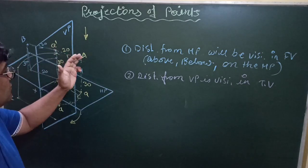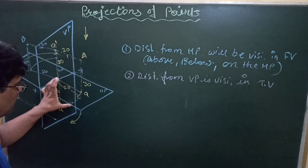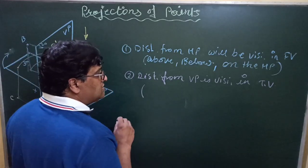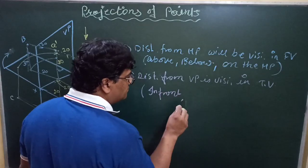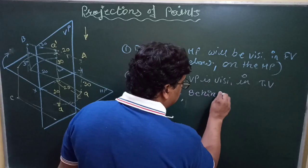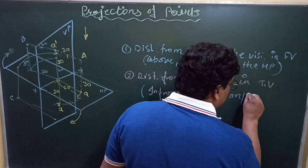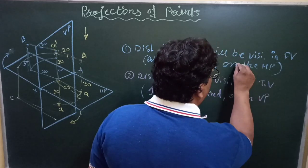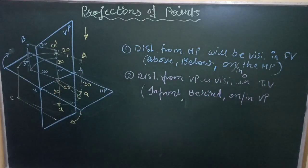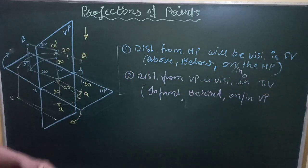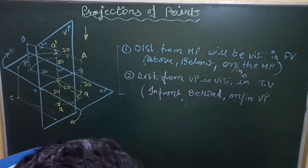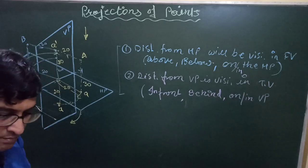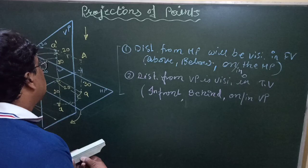Second conclusion: the distance from the vertical plane is visible in the top view always. The distance from the VP — whether 30 mm or 20 mm — is visible in the top view only. The manners in which the distance from the VP is given are: in front, behind, and on or in the VP. These two conditions we have to remember — for front view, consider distance from HP; for top view, consider distance from VP.